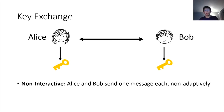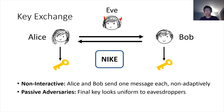In other words, they do not have to wait for each other's message to send theirs, and they could send them simultaneously if they wanted to. The security we'll consider is security against passive adversaries, where there's an eavesdropper Eve who has access to the channel Alice and Bob are communicating over. We want to say that even if Eve sees the messages that Alice and Bob send to each other, the key they agree on should look uniformly random. We'll call a protocol satisfying those two properties a non-interactive key exchange, or NIKE.